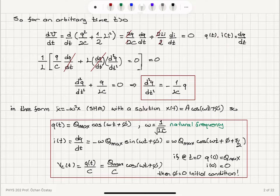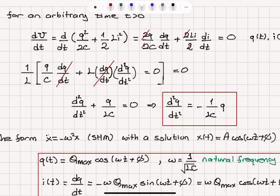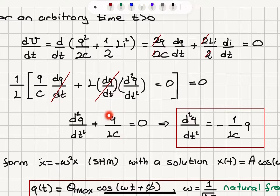The charge is a function of time and current is a function of time, and they are related: current by definition equals dQ/dt. So we obtain Q over C times dQ/dt plus L·i, where i equals dQ/dt and the second derivative of charge with respect to time is di/dt — this must equal zero. For i non-zero, multiplying by 1/L gives d²Q/dt² plus Q over LC equals zero, which implies d²Q/dt² equals minus Q over LC.